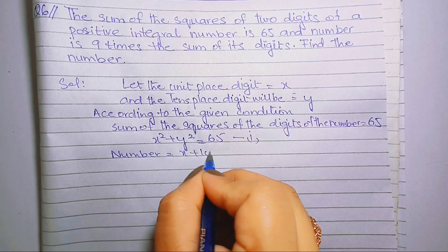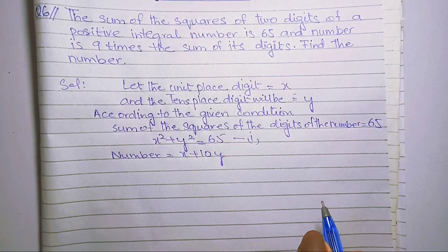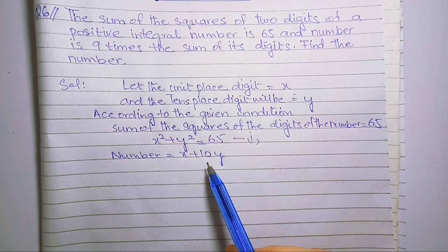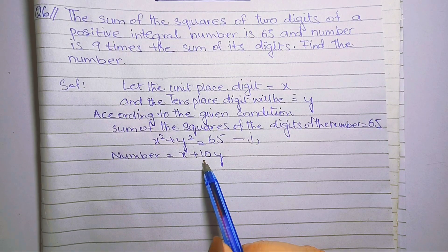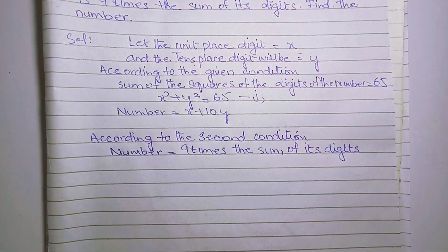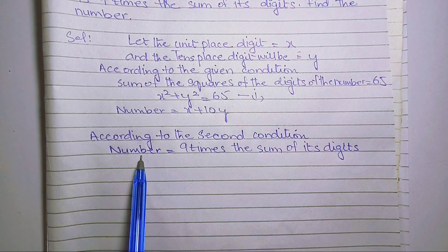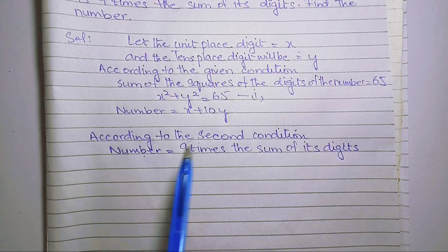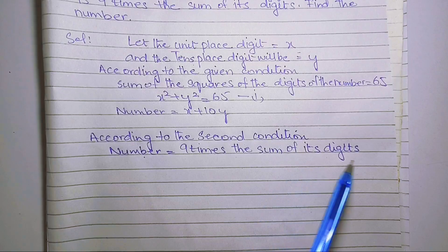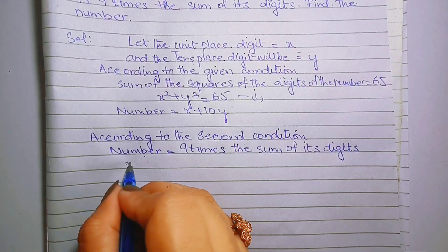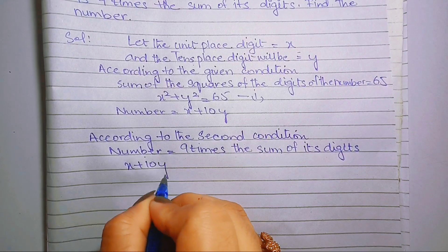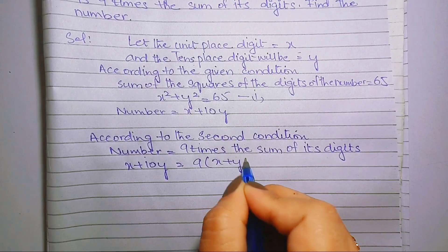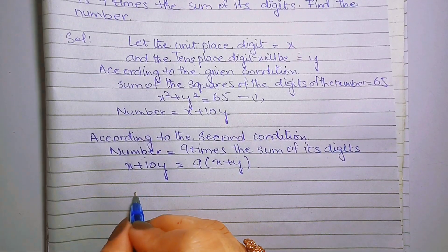Two-digit number की value होगी x plus 10y, क्योंकि x unit place digit है और y 10th place पर है। According to the second condition, number nine times the sum of its digits था, तो x plus 10y equals to nine into x plus y आजाएगा।